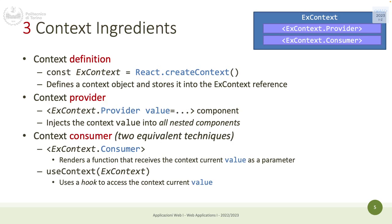You can imagine context like a sort of global variable that everybody can read and someone can also write to. Creating a context uses a hook like state — there is useState and there is useContext. You have three steps: create the context, define who is the provider that injects the value into all components, and then define the consumer who reads it when needed.